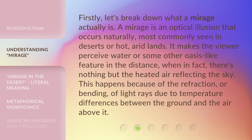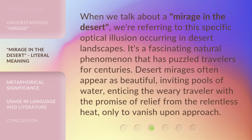This happens because of the refraction, or bending, of light rays due to temperature differences between the ground and the air above it. When we talk about a mirage in the desert, we're referring to this specific optical illusion occurring in desert landscapes — a fascinating natural phenomenon that has puzzled travelers for centuries. Desert mirages often appear as beautiful, inviting pools of water, enticing the weary traveler with the promise of relief from the relentless heat, only to vanish upon approach.